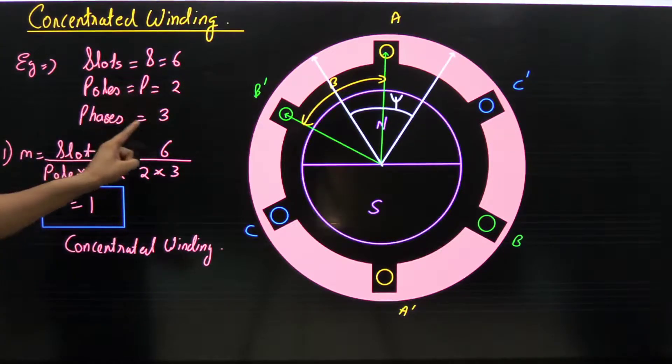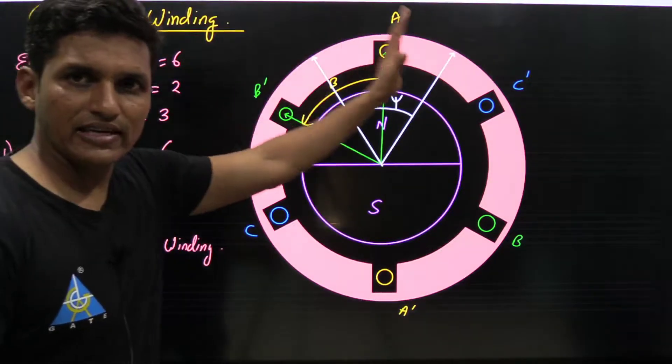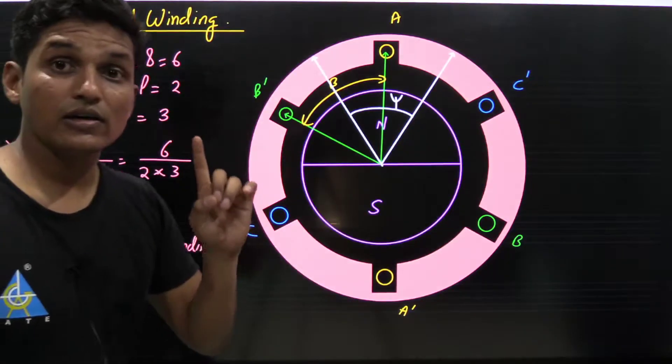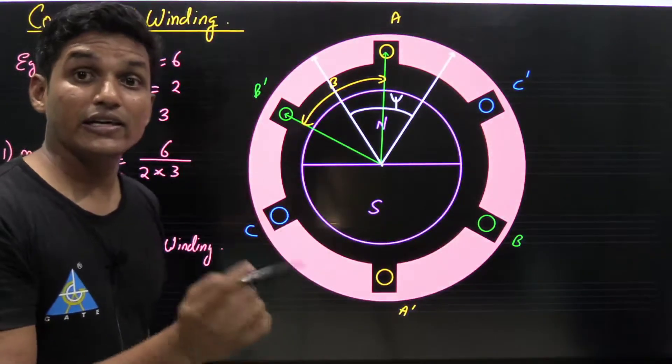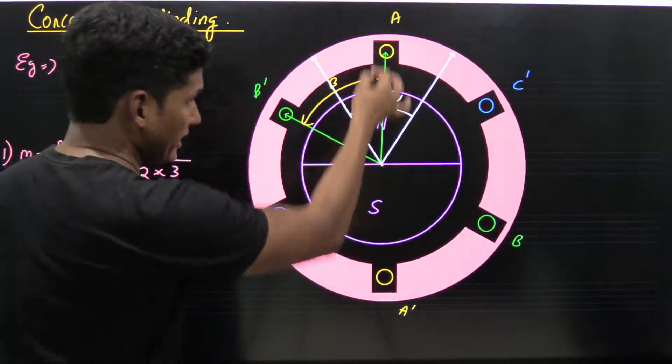In this particular example, there is a stator which is having six number of slots: 1, 2, 3, 4, 5, 6, in which three-phase winding is placed - A phase, B phase, C phase - whereas number of poles is 2, north and south.